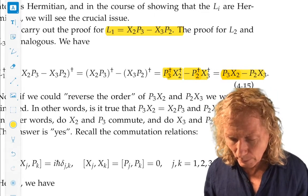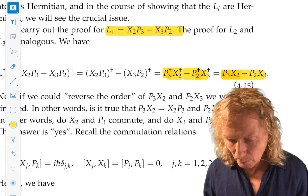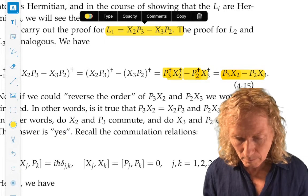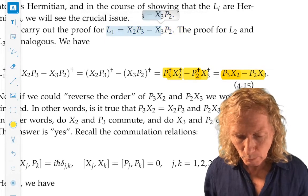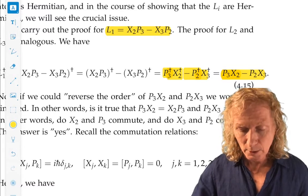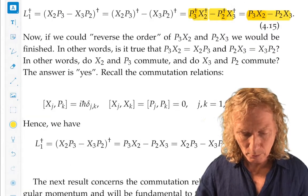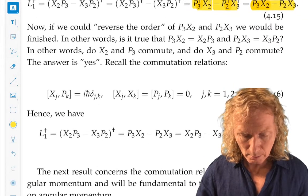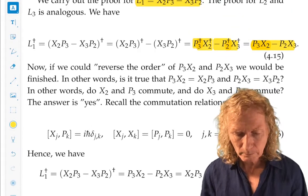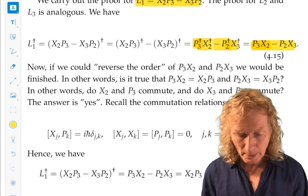Now, back to what I was about to say, if we could reverse the order of P3 and X2, and P2 and X3, we would have exactly what I have up here. But we know that, in general, operators do not commute.